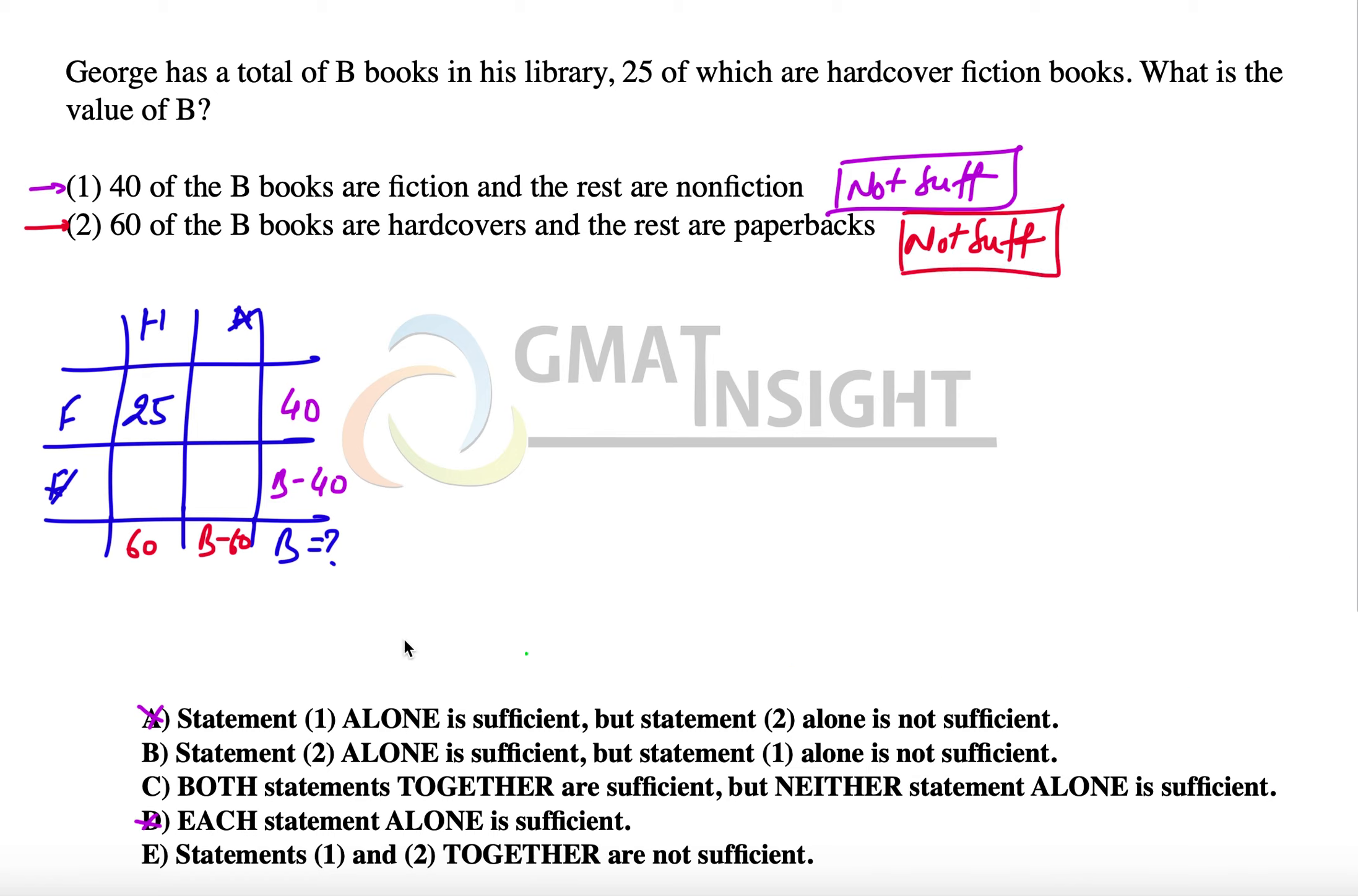And now we can see that even after we combine the two statements, we can't infer the value of B. Because if this part is 25, we can find out that this part is 15. But this is 25, we can find out that the remaining part is 35. But this part is still unknown, because we can calculate it using the first column. And in that case, this value, the question mark, will come out to be B minus 60 minus 15, that means equal to B minus 75.